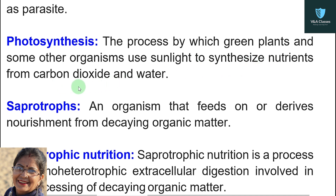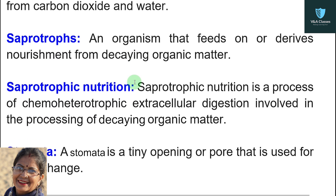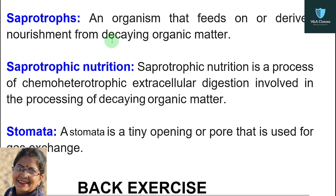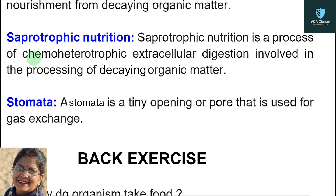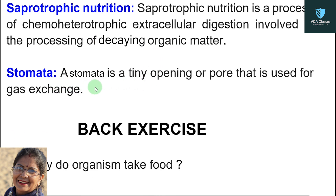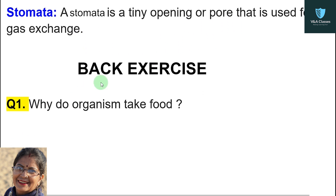Photosynthesis: the process by which green plants and some other organisms use sunlight to synthesize nutrients from carbon dioxide and water. Saprotrophs: an organism that feeds on or derives nourishment from decaying organic matter. Saprotrophic nutrition: a process of chemohydrolytic extracellular digestion involved in the processing of decaying organic matter. Stomata: a stomata is a tiny opening or pore that is used for gas exchange.